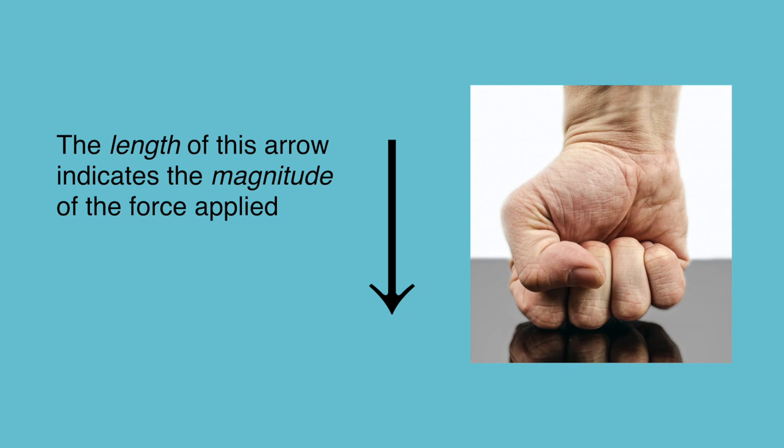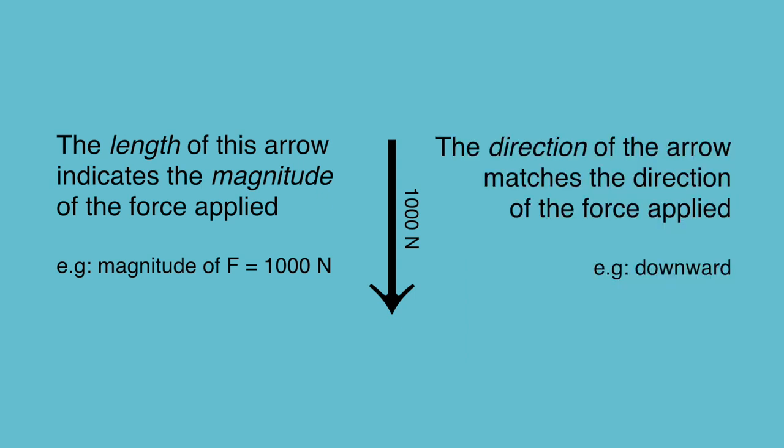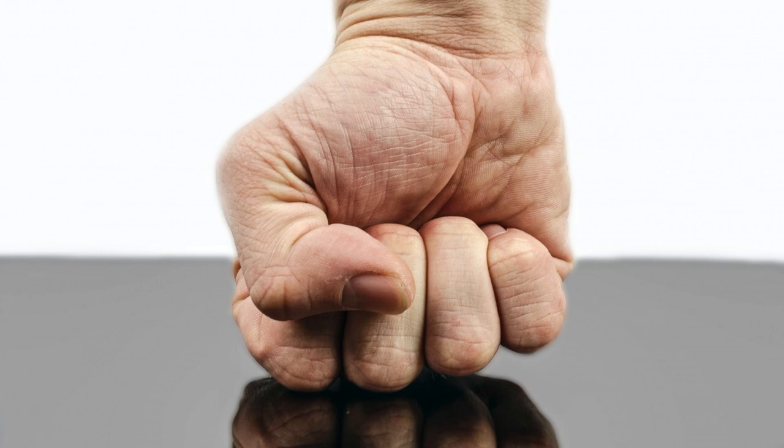Since forces are measured in newtons, we can say in this case that the vector's magnitude is 1,000 newtons. The direction in which the force is applied is shown by the direction the vector points. When you look at something like the force of a punch, the direction of the force is fairly obvious, toward the target.